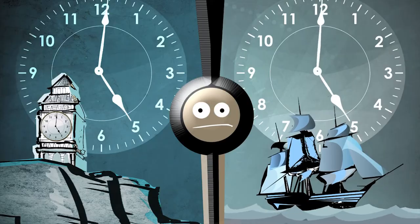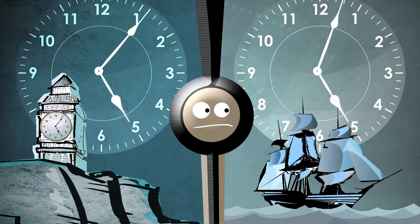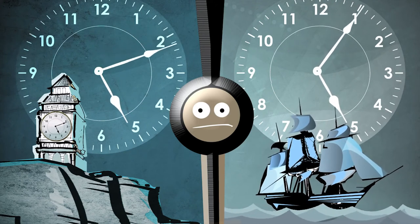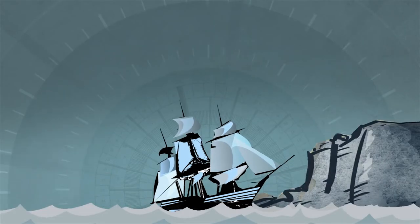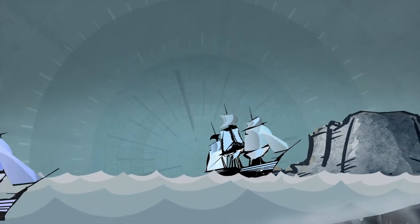However, clocks back then weren't very accurate, and if a ship's chronometer drifted off by even a few sammies from the main clock, it could mean the difference between finding their destination and being hopelessly lost.